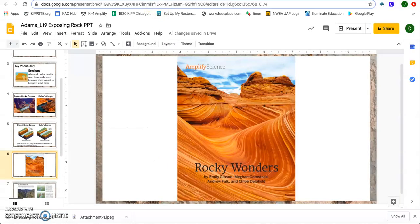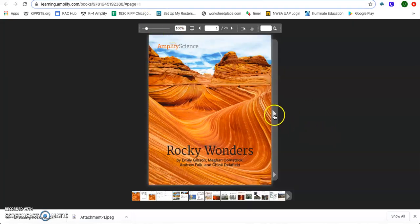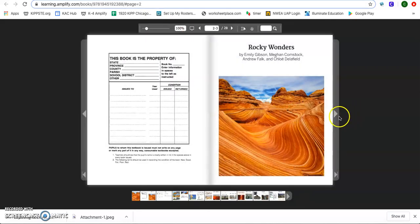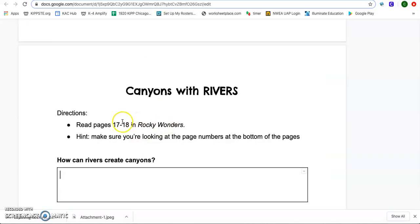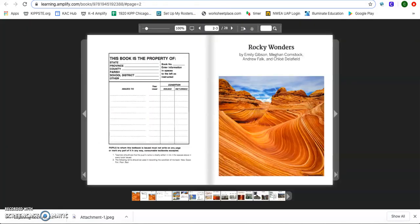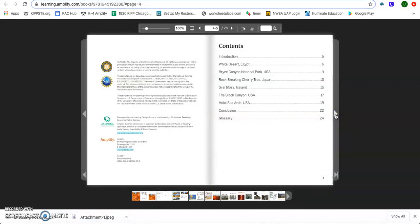Let's go ahead and get into our text, Rocky Wonders. Remembering we are reading pages 17 and 18. If we want to know the title of pages 17 and 18 and what we're specifically reading about, you can come to the table of contents. And page 17 lets us know that we are reading about the Black Canyon, which is actually located in the United States of America. Let's go ahead and get to page 17.